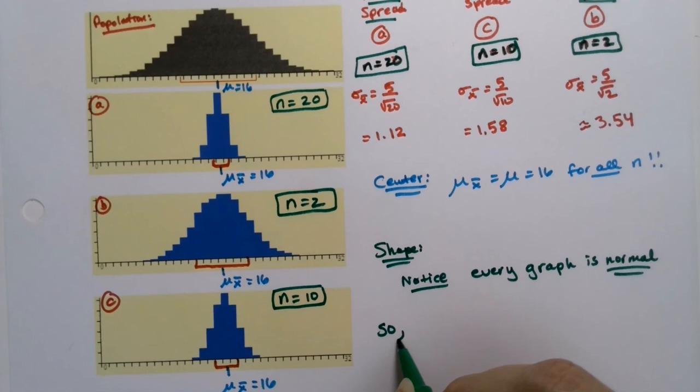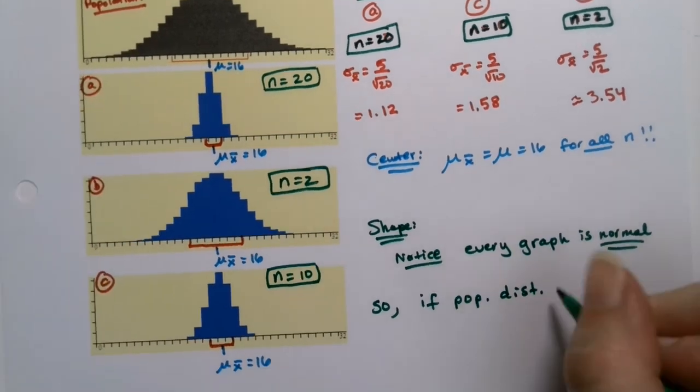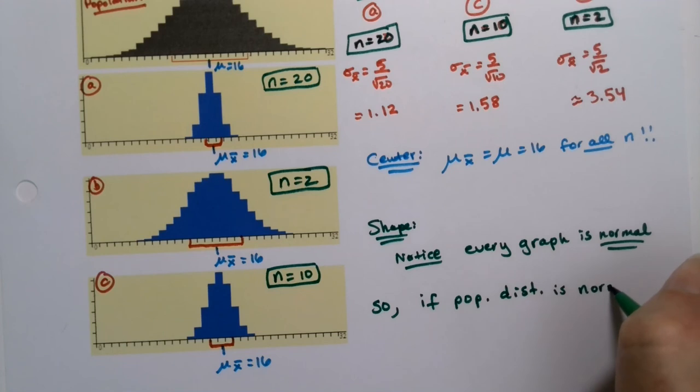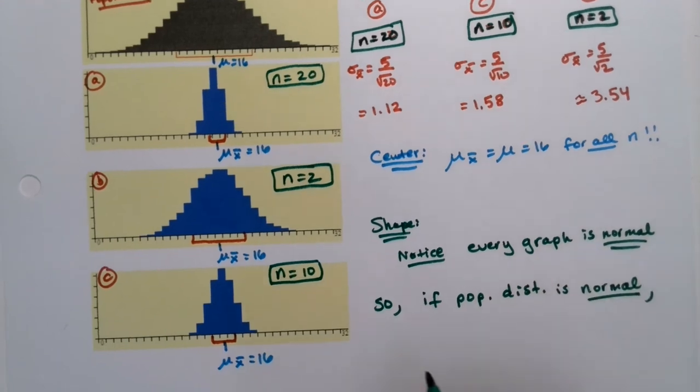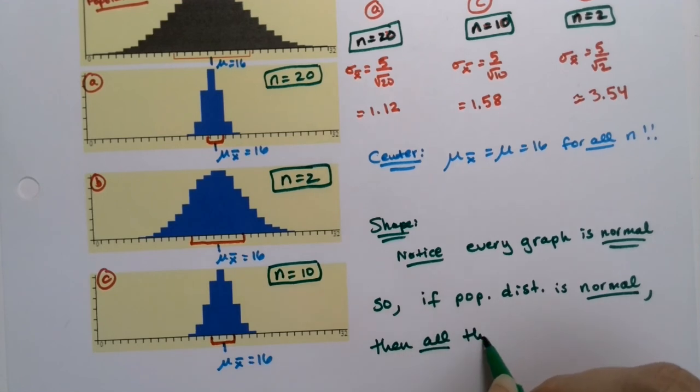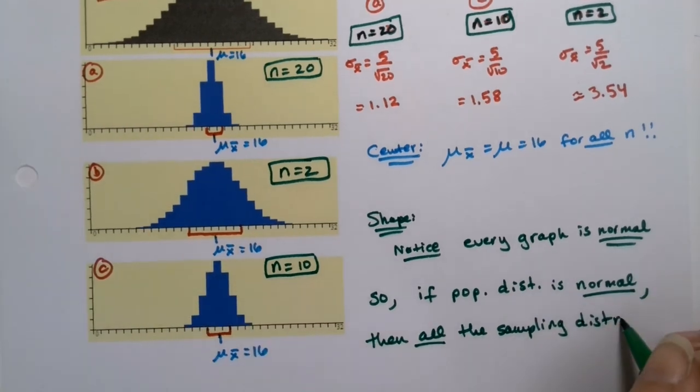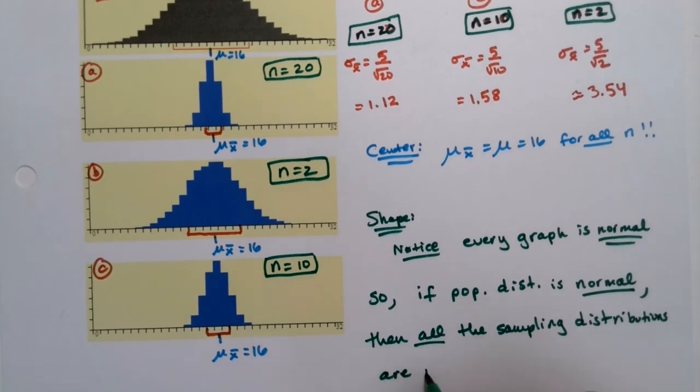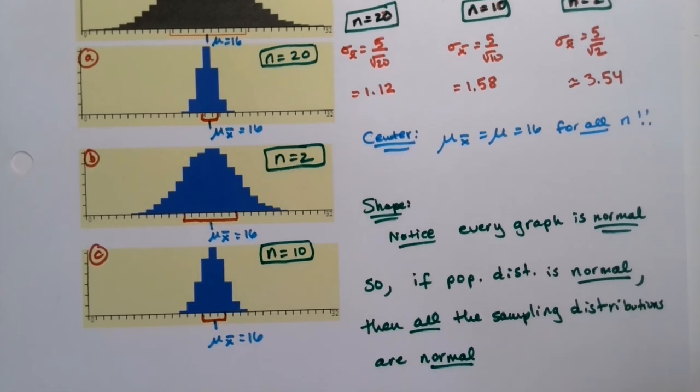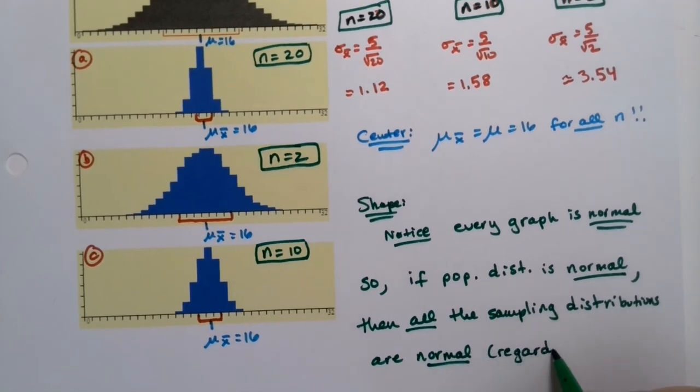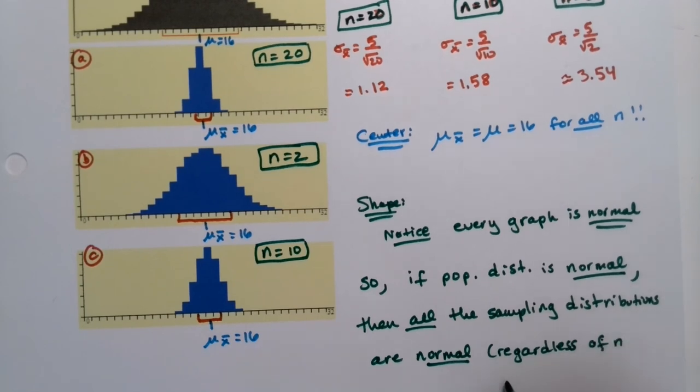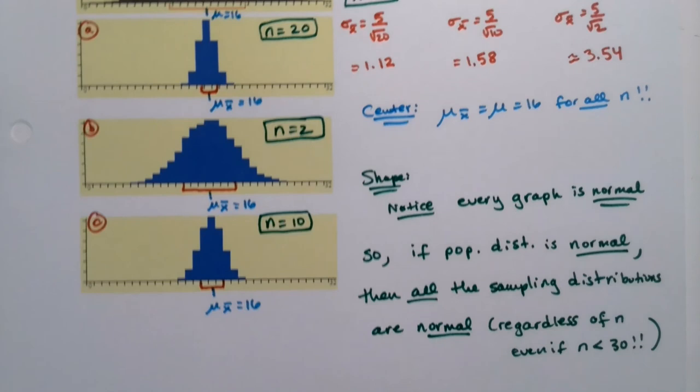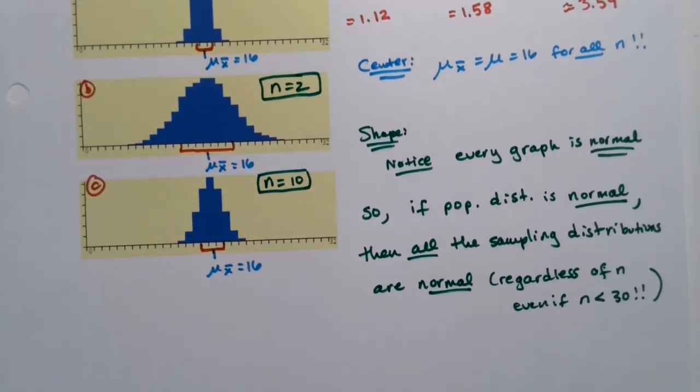So what does that mean? So that means that if the population distribution, which I'm going to abbreviate population distribution, which is the kind of gray one up here, if that population distribution is normally shaped, normal, or normally distributed, then all the sampling distributions, all the x-bar distributions, which is what we're looking at, are normal. Even if n is less than 30, regardless of n. In other words, even if n is small, even if it's less than 30, it doesn't matter. Every single one of these was normal because the population was normal.